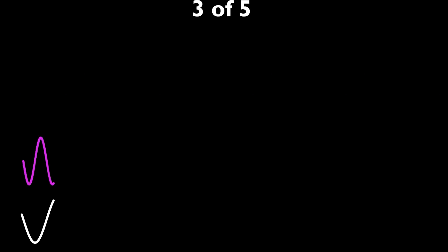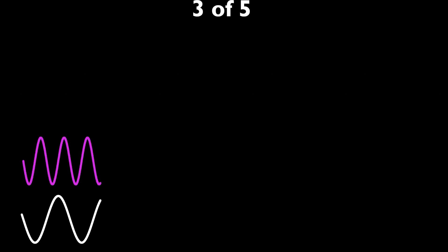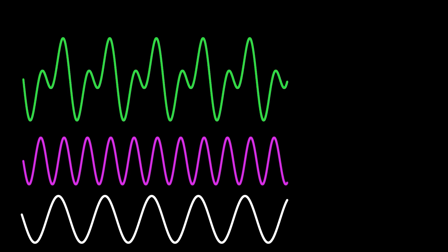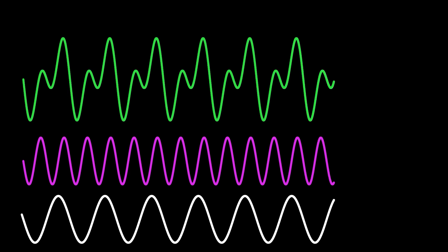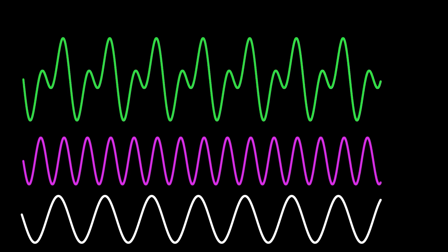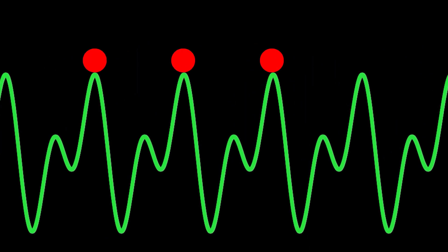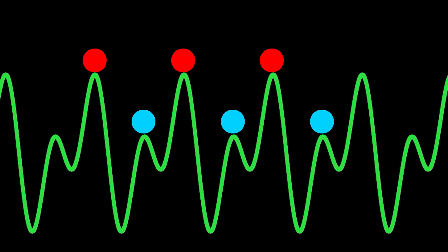The purple wave now has a frequency of 2 times the white one. The resultant green wave is clearly periodic. Perhaps you can identify the components that have gone together to create it. This wave will sound pulsating because it has two distinct maximum displacements regularly repeating within it.